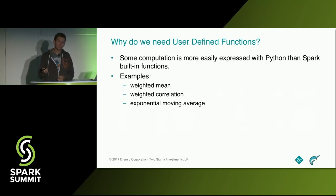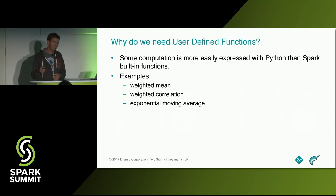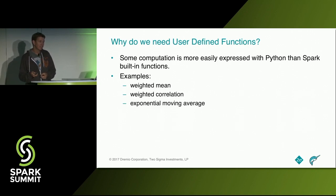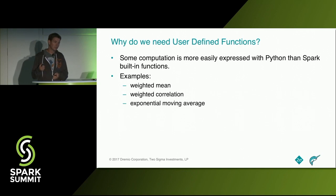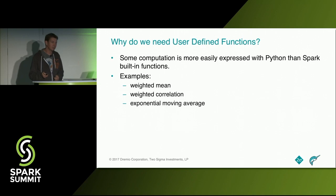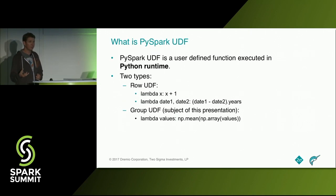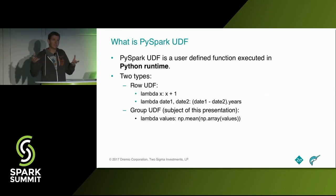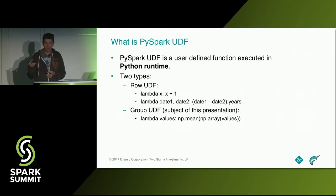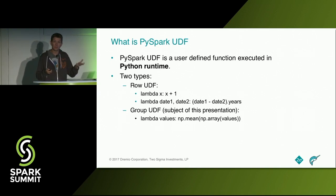The reason for PySpark is that there are a lot of things that are much easier to express using Python than the built-in Spark features — for example, weighted means, correlation, moving average. The way a PySpark UDF works is you express your Spark pipeline using Python and use Python lambda expressions inside of it, and they're going to be run inside the Python runtime, where Spark runs on the JVM.